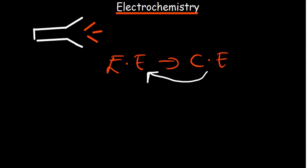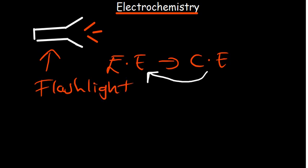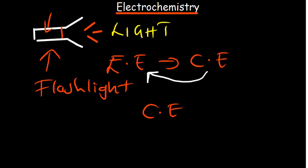Let's first review a flashlight — how does it produce light? It uses a cell or a battery. The battery stores energy in terms of chemical energy, and for light to be produced there is a conversion from chemical to electrical energy. That electrical energy is what causes the flashlight to work.